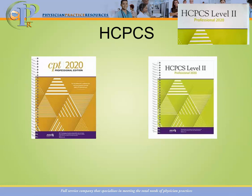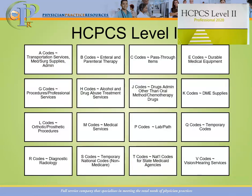CPT codes, as you may recall, are five characters in length. HCPCS codes are also five characters in length. One big difference is that HCPCS codes actually start with a letter as opposed to a number. Those letters — A through V — actually identify specific supplies and services that can be captured with a HCPCS code.